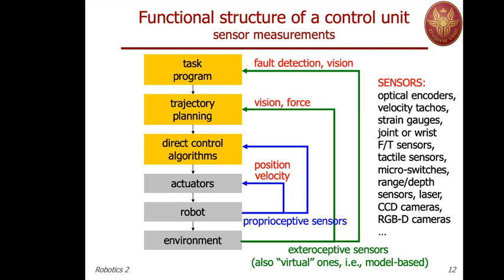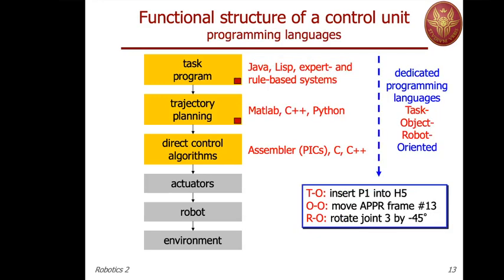Virtual sensors are very successful and reliable once the model is a good one. Remember that every sensor you add wins something but also introduces failure risk — sensors are typically the first things that fail in a system. Another way of looking at the functional structure of a control unit is through the programming languages used. Each level is best handled by the proper programming language. There are dedicated robotics programming languages classified as task-oriented, object-oriented, and robot-oriented.